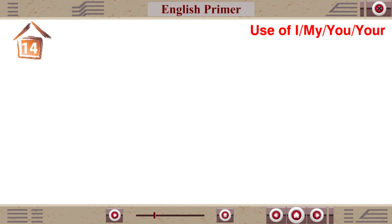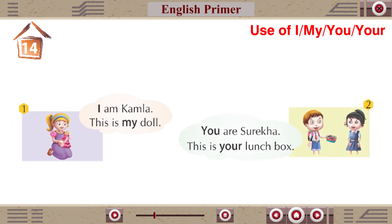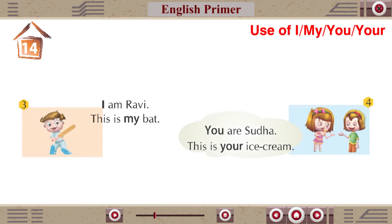Chapter 14: Use of I, My, You and Your. I am Kamla. This is my doll. You are Surekha. This is your lunchbox. I am Ravi. This is my bat. You are Sudha. This is your ice cream.